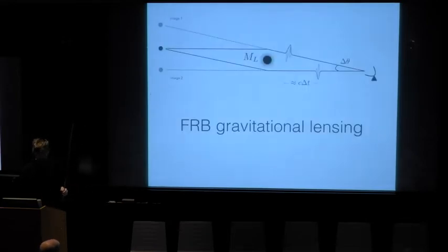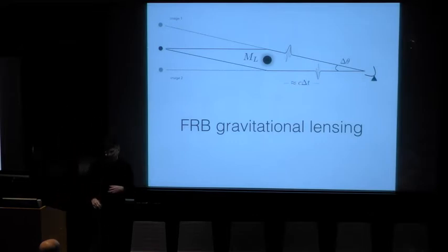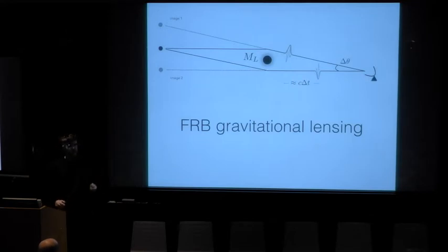So I'll talk today about a couple of these things and how, depending on what your science goal is, depending on what you're trying to learn about FRBs or how you're trying to use them, you can end up actually requiring fairly orthogonal survey setups and instrument designs. So I'll talk a little bit about how you can maybe reach a compromise and optimize the amount of science you want to get out of a given survey.